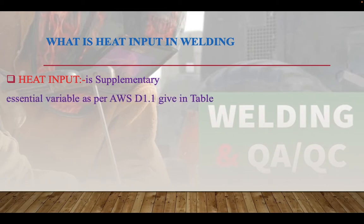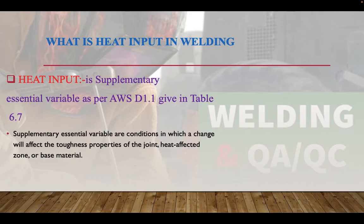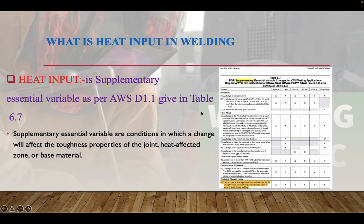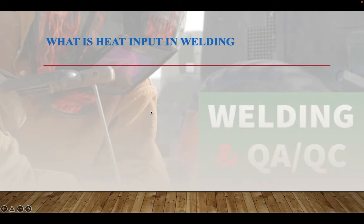Heat input is also a supplementary essential variable as per AWS D1.1, given in table 6.7. As both AWS D1.1 and ASME are American standards, heat input is classified as a supplementary essential variable per the code. In the table under electrical characteristics, you can see the increase in heat input listed. Heat input is a supplementary essential variable for all the processes given in that section.